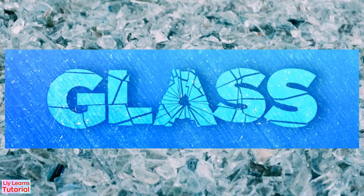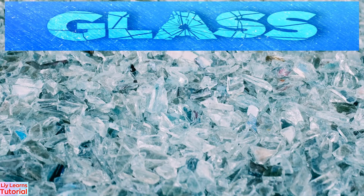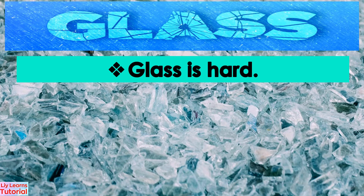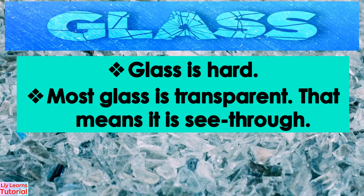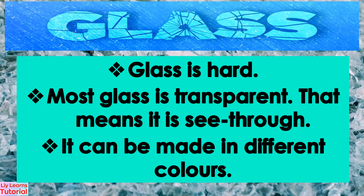Glass. Glass is hard. Most glass is transparent. That means it is see-through. It can be made in different colors.